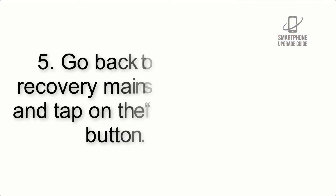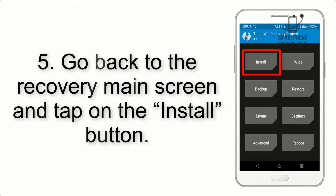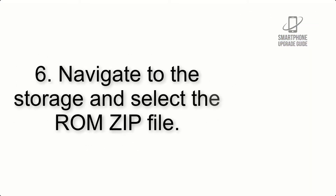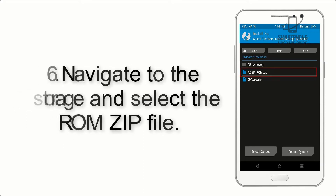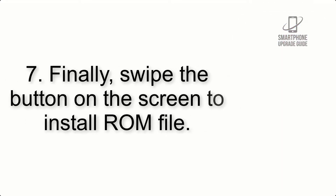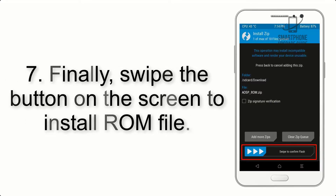Step 4: Swipe the button to wipe the device. Step 5: Go back to the recovery main screen and tap on the Install button. Step 6: Navigate to the storage and select the ROM zip file.